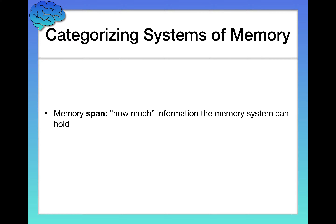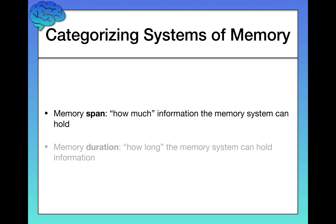First of all, the memory systems differ in their memory span, which simply refers to how much information that particular memory system can hold. Second of all, we have memory duration, which simply refers to how long the memory system can hold that information.